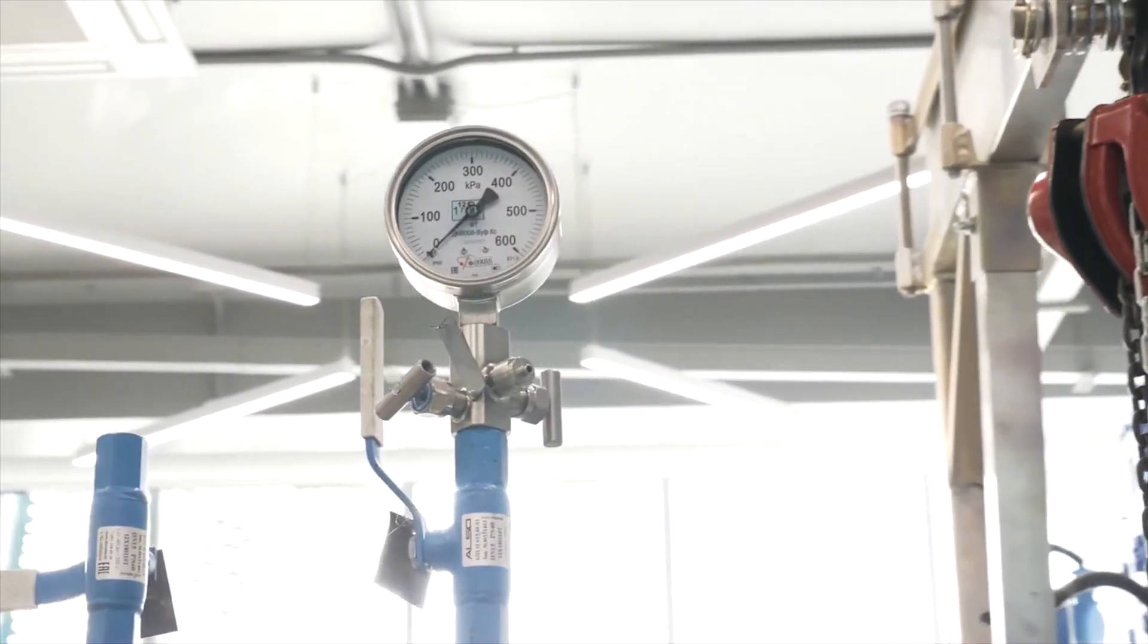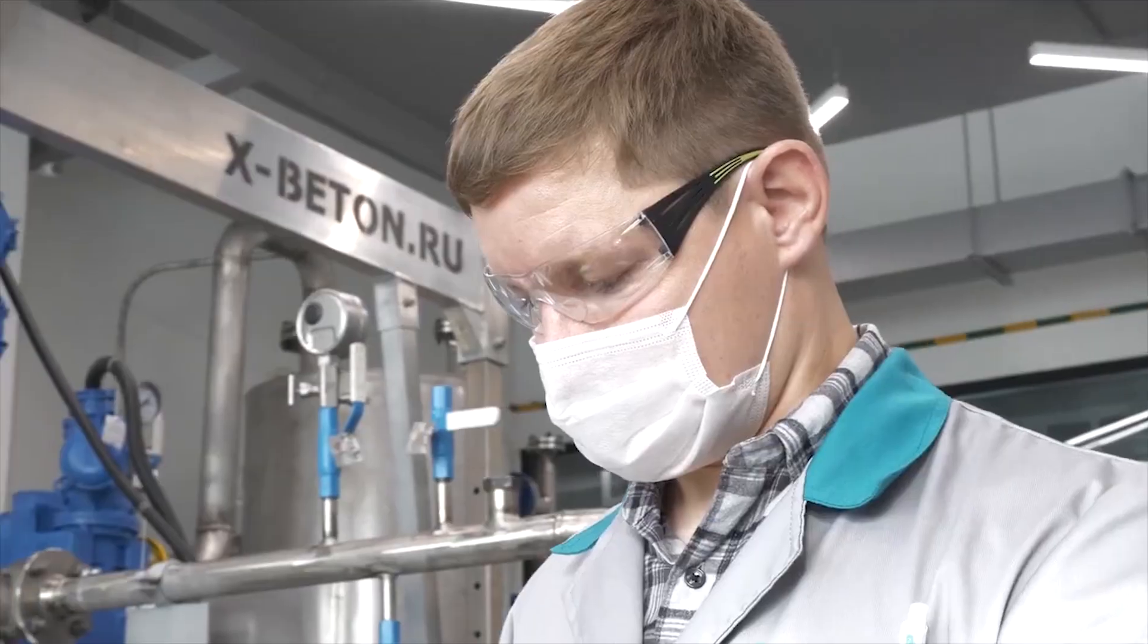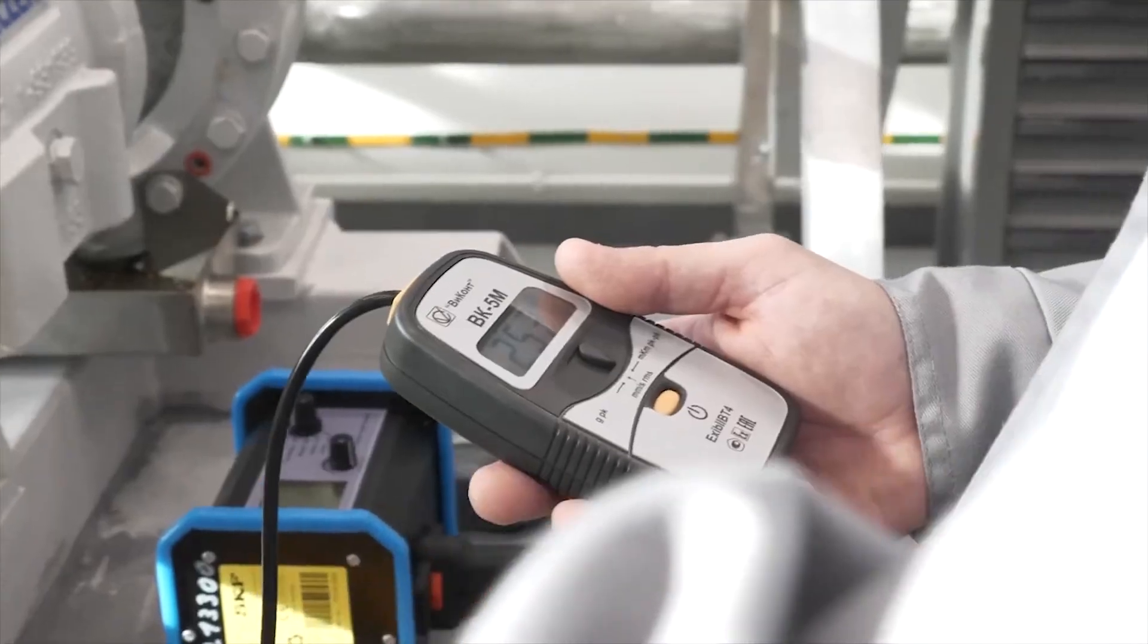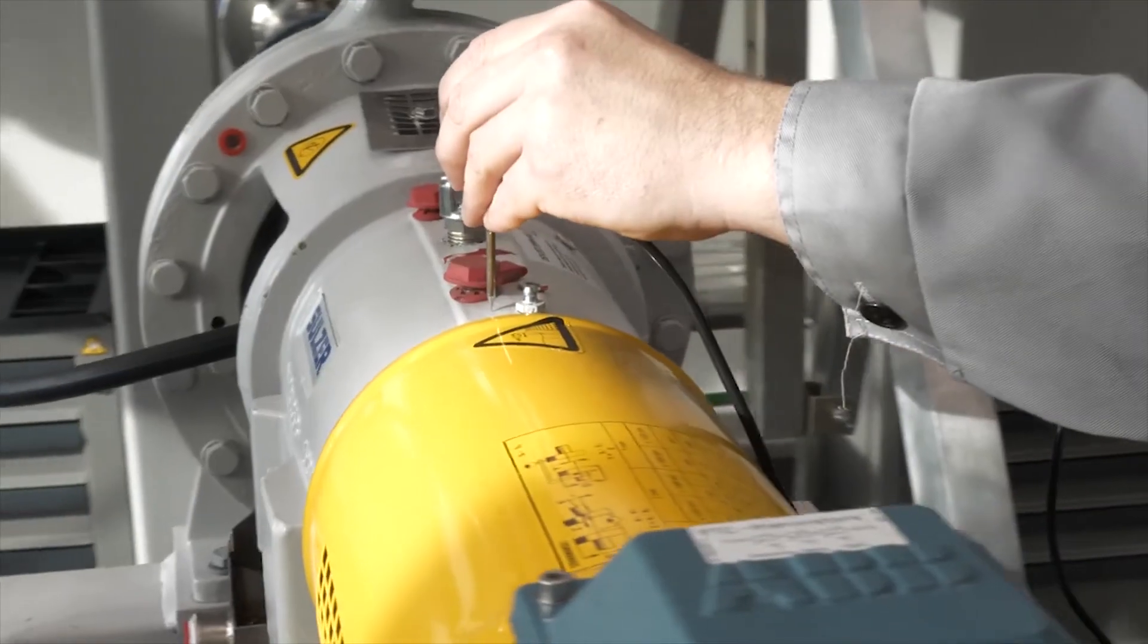We see that petrochemical production today versus petrochemical production several years ago represents a different level of automation, different tasks, and different requirements for personnel. This is a combination of professions and various knowledge, with constant updating of this knowledge and these competencies.